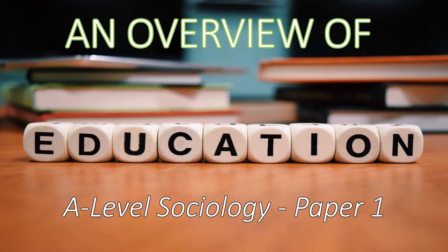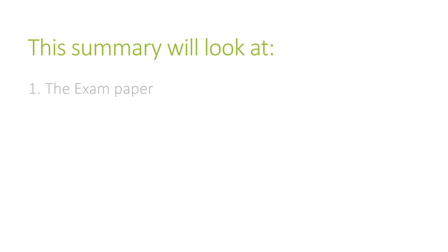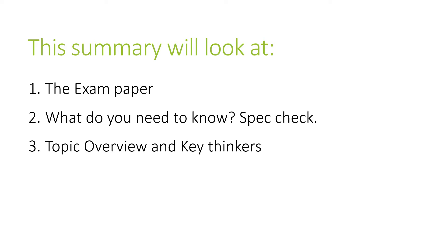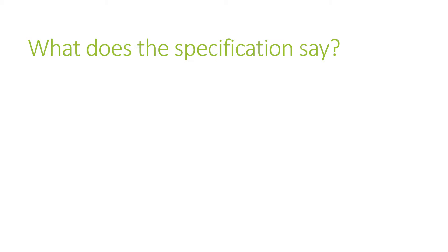This is a short overview of the education topic for A-level sociology paper one. This will be useful either as revision once you've covered the topic, or as a brief introduction to what you may be coming across as you study the unit. We'll look at the exam paper briefly, discuss what the spec tells us we need to cover, overview the five key topics in education, and review key thinkers.